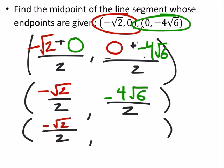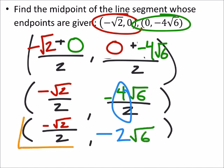So I got negative square root of 2 over 2. And right here I can simplify this 4 and 2, that would give me negative 2 times the square root of 6. So this would be fully simplified.